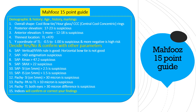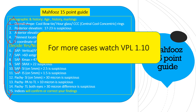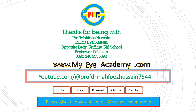To recap: the first five points made it clear whether the patient has a normal or abnormal cornea, and number fifteen — the indices — confirmed our findings. They are all based on elevation and pachymetry maps, not the sagittal maps. The first five points are very important and it is not possible that the first five points are normal and you then decide the cornea is abnormal on the rest. For more cases watch VPL 1.10 for practice and confirmation of the 15-point guide. Thank you very much for being with me — do subscribe to the channel to see more videos.